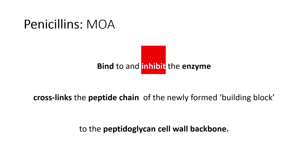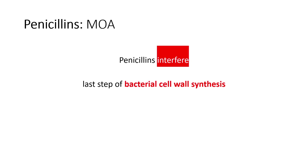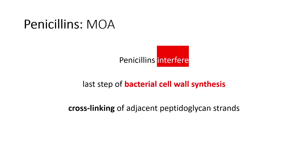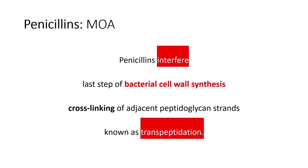By binding to transpeptidase, penicillin inhibits the cross-linking of the peptide chain of the newly formed building block to the peptidoglycan cell wall backbone. This interferes with the last step of bacterial cell wall synthesis — that is, the cross-linking of adjacent peptidoglycan strands. This process is called transpeptidation, and the enzyme involved is transpeptidase.